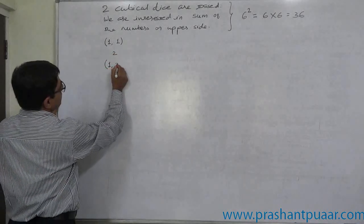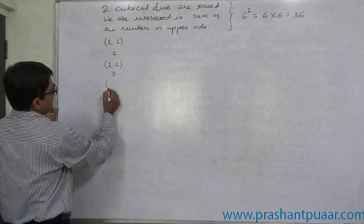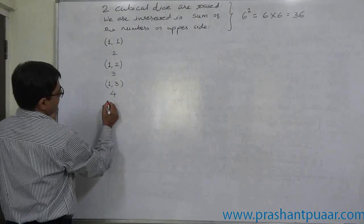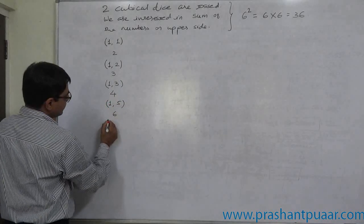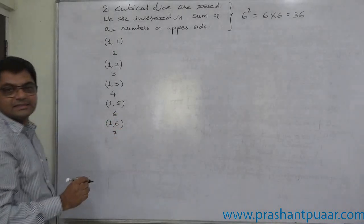Now, another possible pair is one, two. The summation will be three. Another pair is one, three. Summation will be four. And same way, one, five. Summation will be six. And one, six. The summation will be seven.